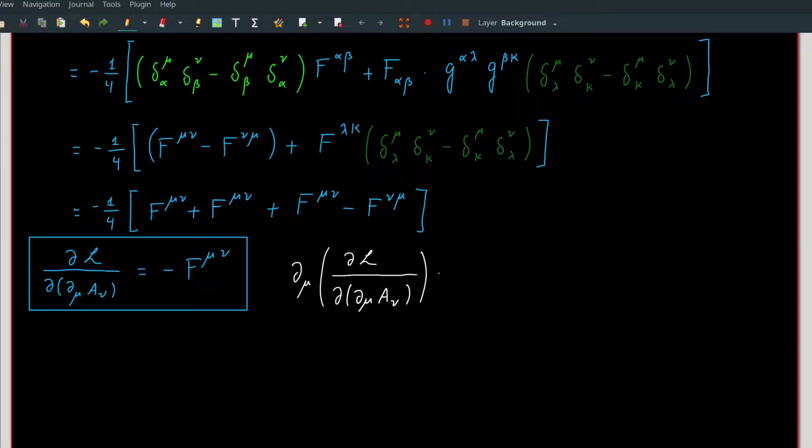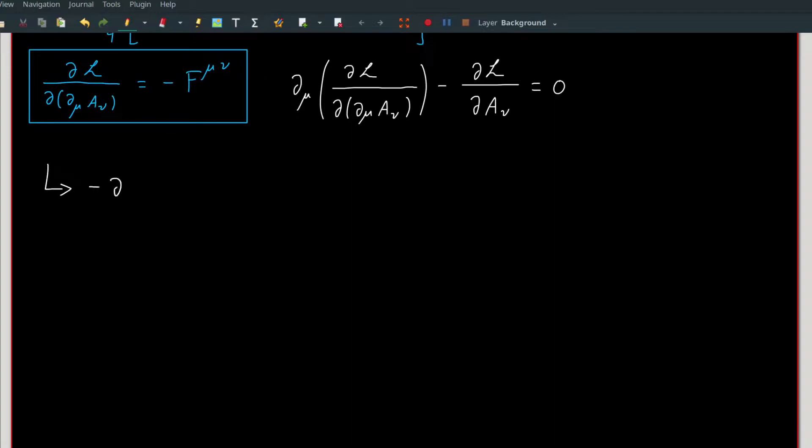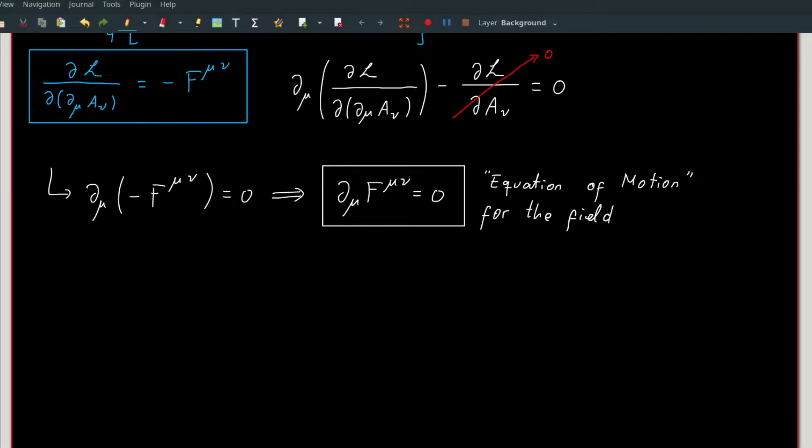Let us now go back to the Euler-Lagrange equation. The Lagrangian here only depends on the derivative of A, i.e. no explicit dependence on A directly. Therefore, the second term is zero. This gives us the equation of motion for the field f or implicitly for A: ∂_μ F^{μν} equal to zero.